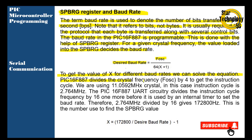The PIC16F887 divides the crystal frequency by 4 to get the instruction cycle. We are using an 11.0592 MHz crystal, so the instruction cycle frequency is 2.764 MHz. The PIC16F887 UART circuit divides the instruction cycle frequency by 16, one more time before it is used by an internal timer to set the baud rate. Therefore, 2.76 MHz divided by 16 gives 172,800 — this is the number used to find the SPBRG value, and from this formula we can calculate the baud rate.